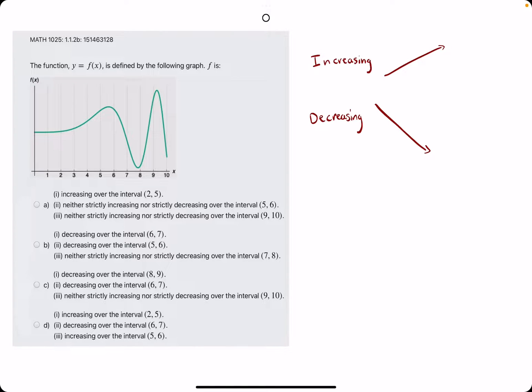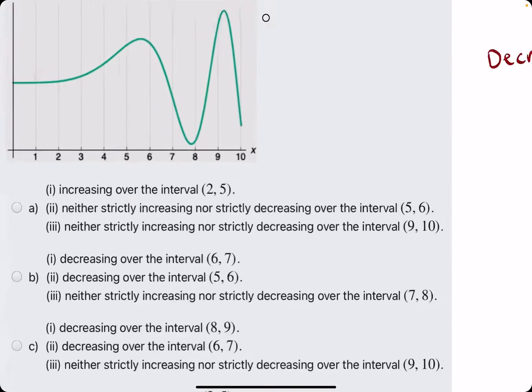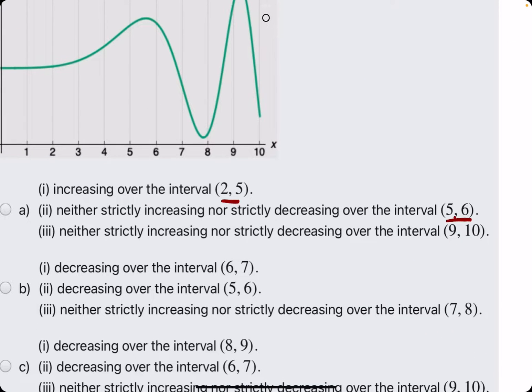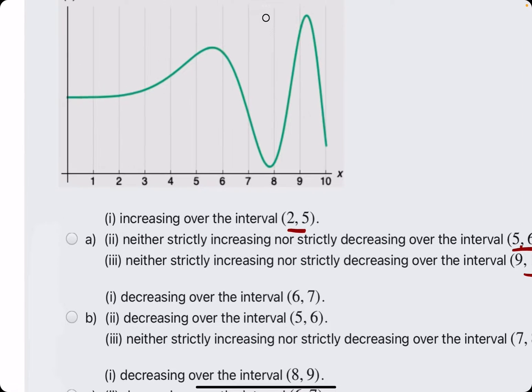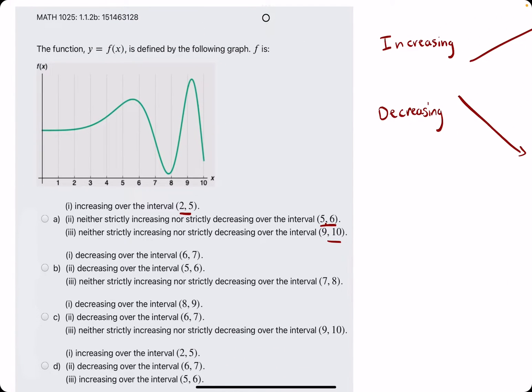In this problem they give us a function f on a graph and they're asking about the intervals for which it is increasing, decreasing, or neither strictly increasing or decreasing over certain intervals. Keep in mind with each of these intervals they're describing an interval of x values. So for the first one, from 2 to 5, they're describing what the graph is doing from x equals 2 to x equals 5.